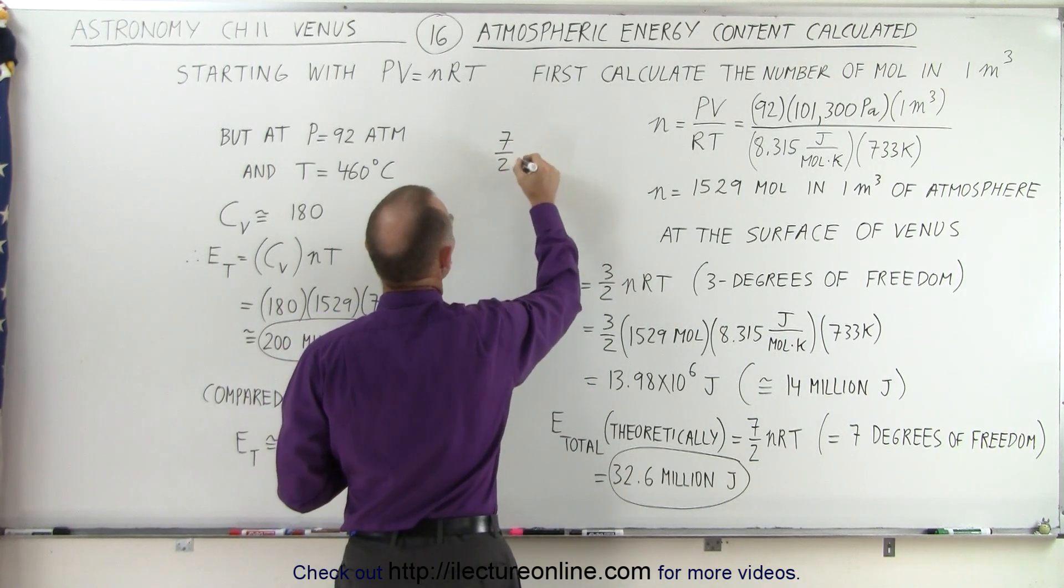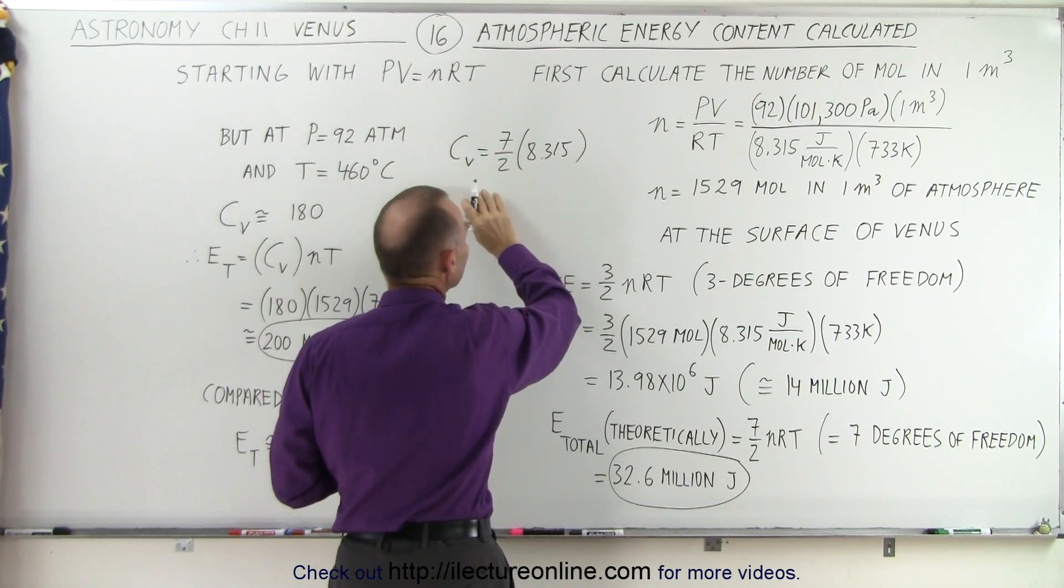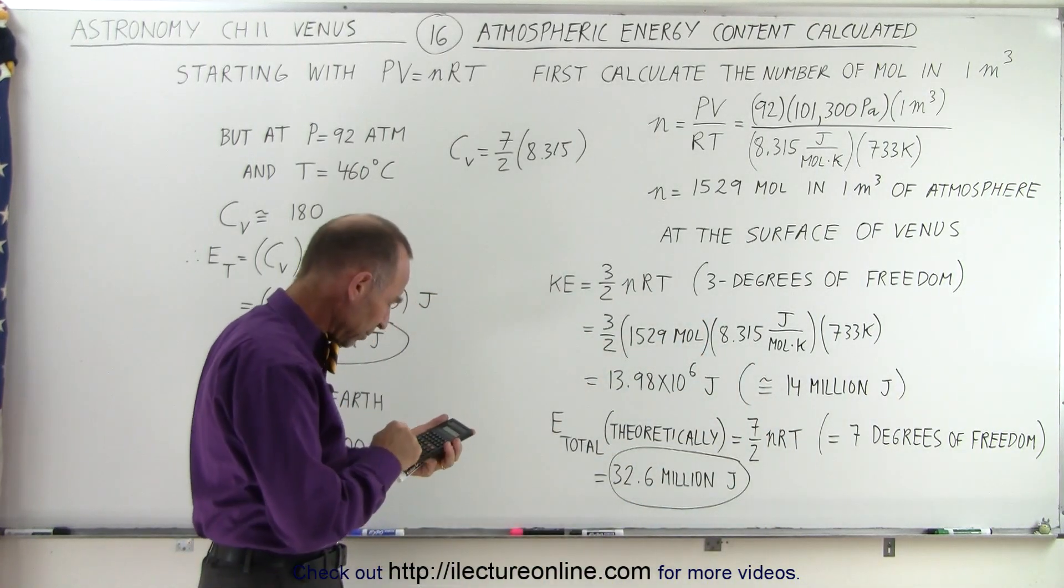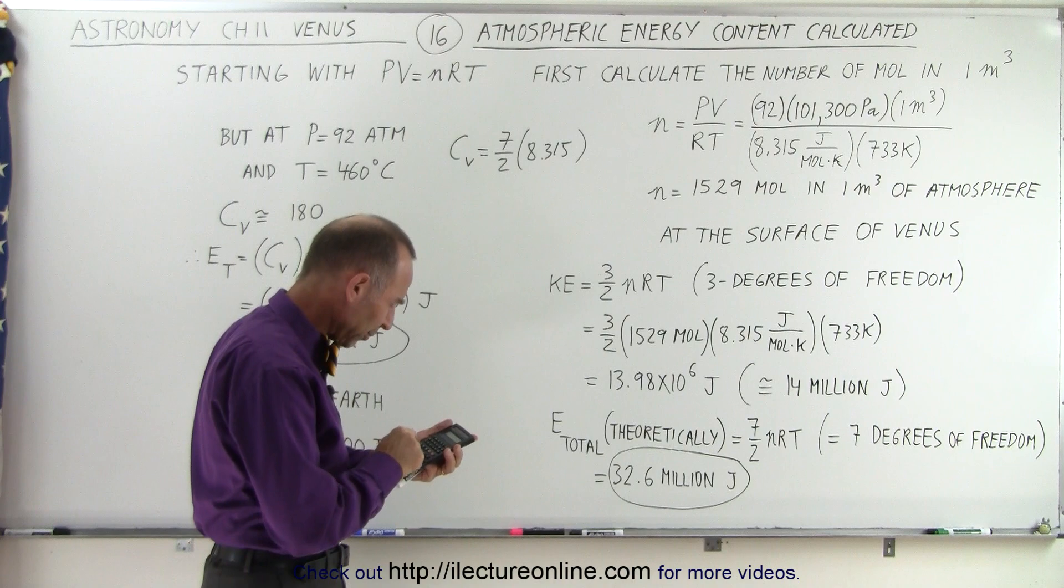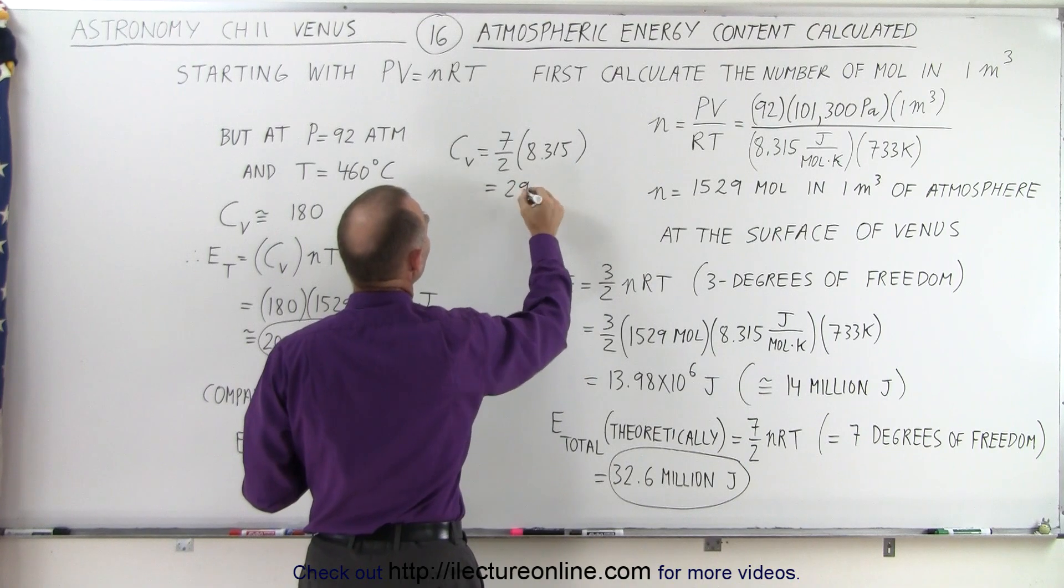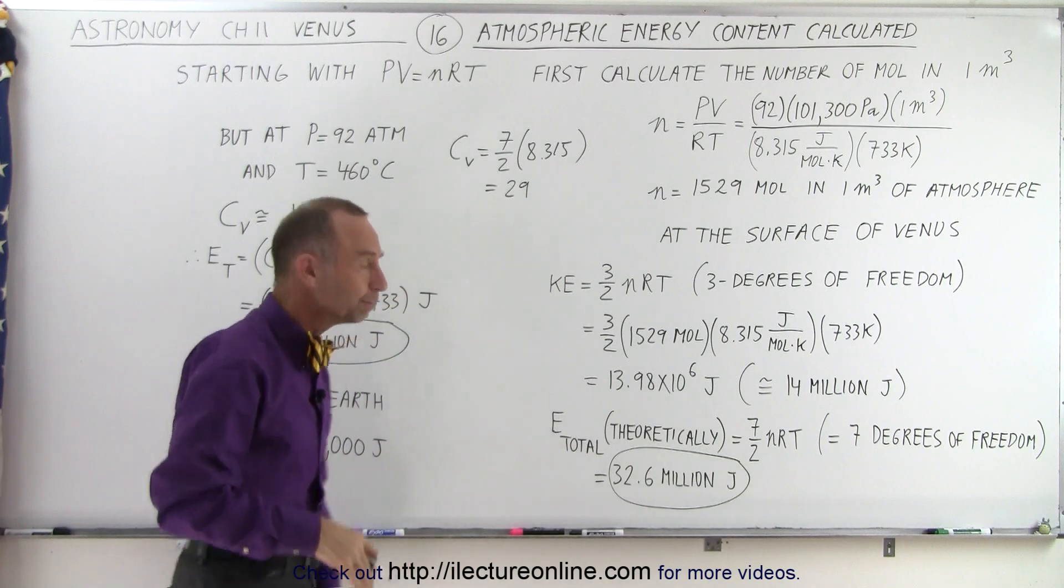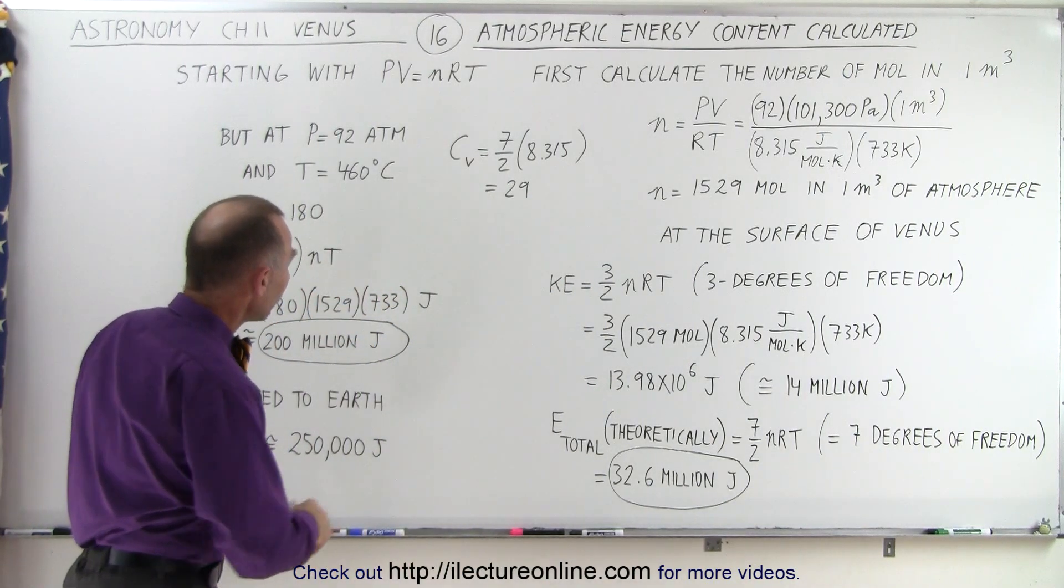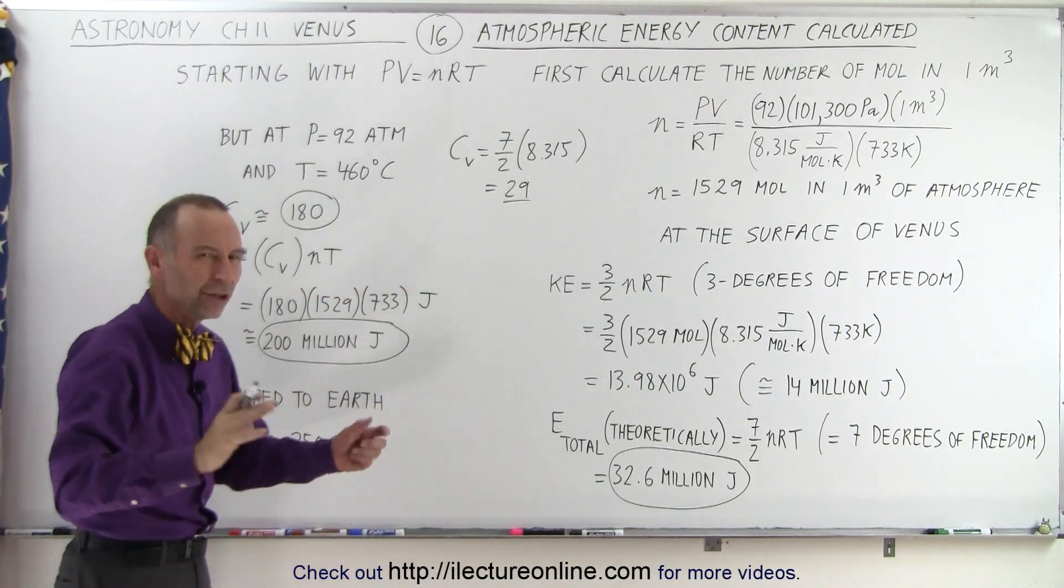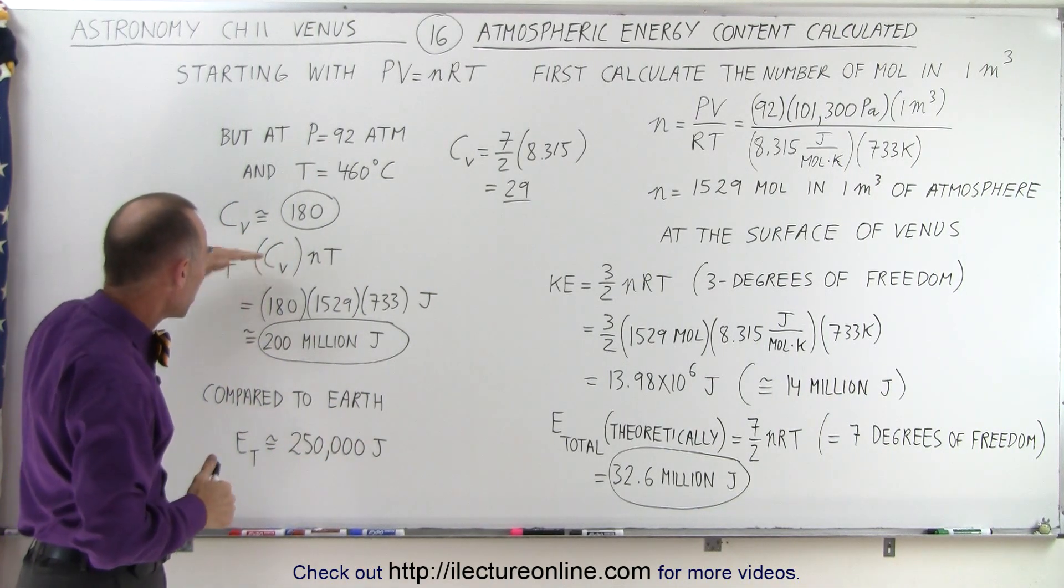So what's 7 over 2 times 8.315, which is equal to the C sub V theoretically of a triatomic molecule. So let's do a quick calculation here. 8.315 times 3.5, that's about 29. So theoretically, the C sub V is about 29, and that would be joules per mole per Kelvin. So instead of 29, the theoretical value that we use here, it's actually 180, because of the enormous compression, which adds an enormous amount of heat capacity.